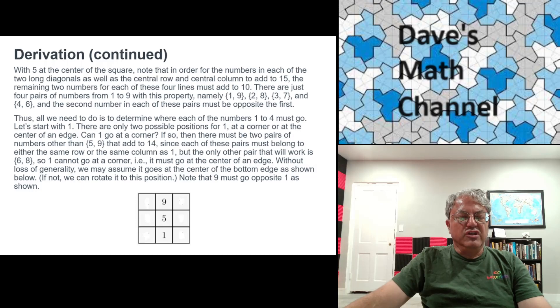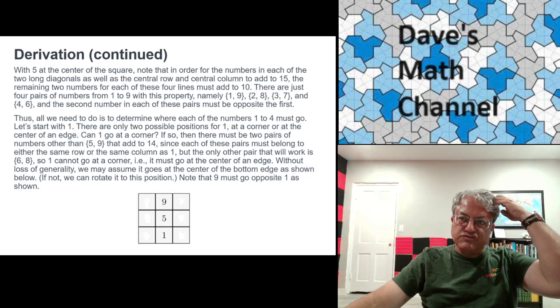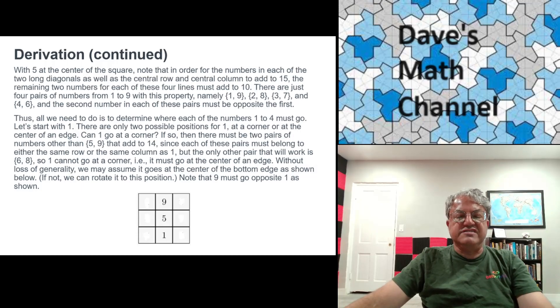That means it has to go, if it's going to go anywhere, it has to go at the center of an edge. Well, and again, without loss of generality, we can assume that it goes in the center of the bottom edge. This will work because now there's only one other row it can belong to, namely the bottom row, and the other numbers in that row are going to be 6 and 8. So here we have the central column, which I wrote as 9-5-1.